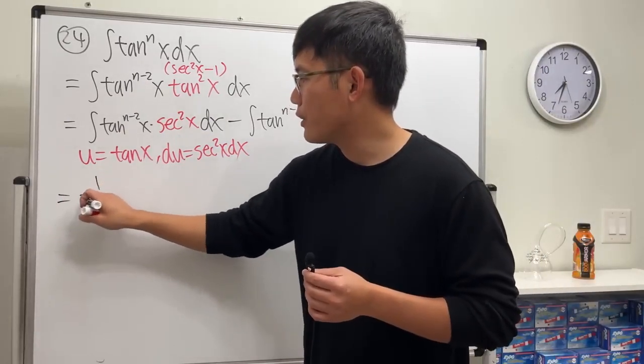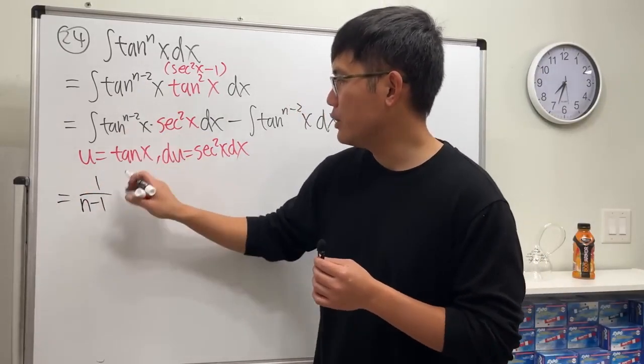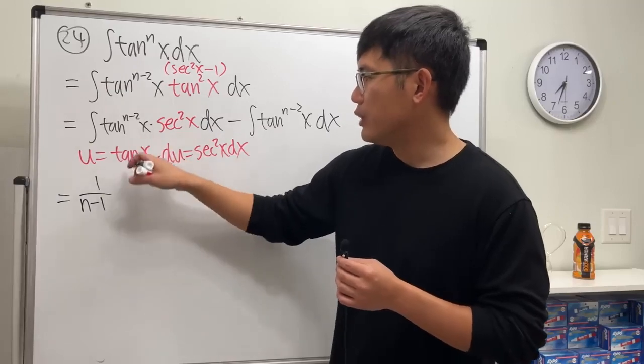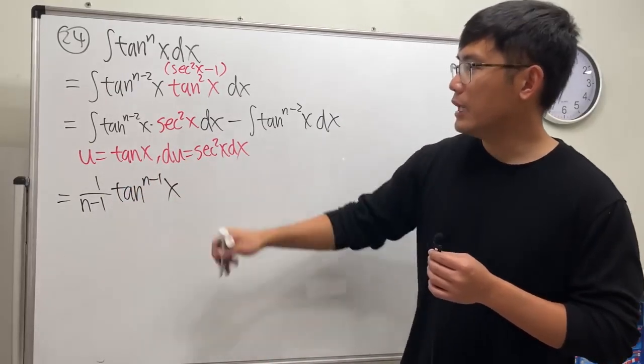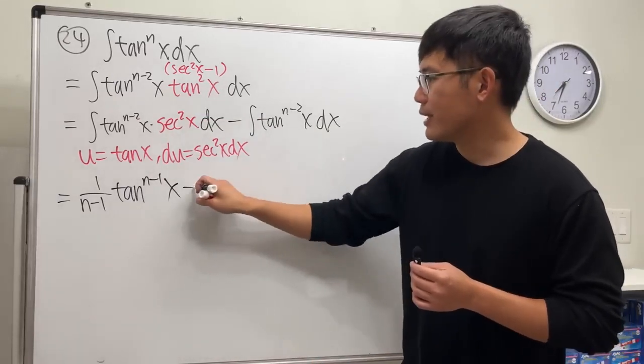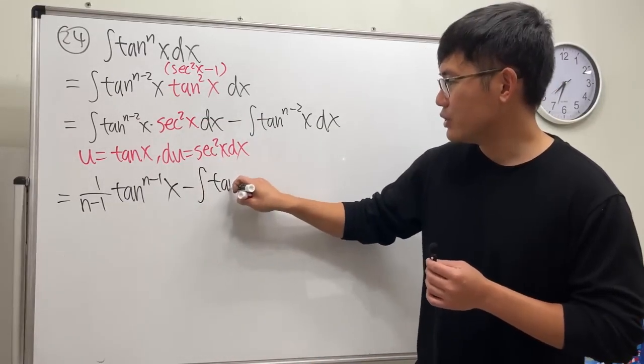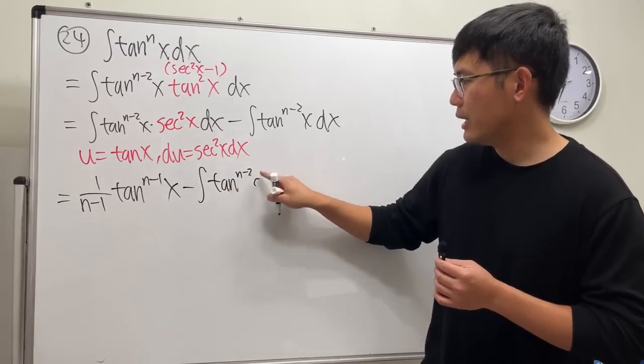So this becomes 1 over n minus 1, and then u to the n minus 1. And u is tangent, so tangent n minus 1. That's the first part. Then we subtract the integral tangent n minus 2, x dx.